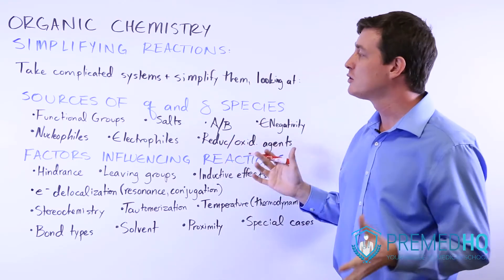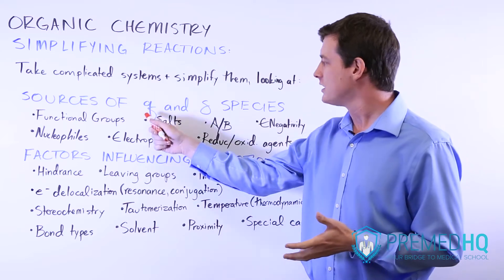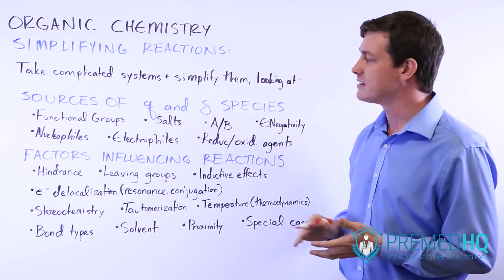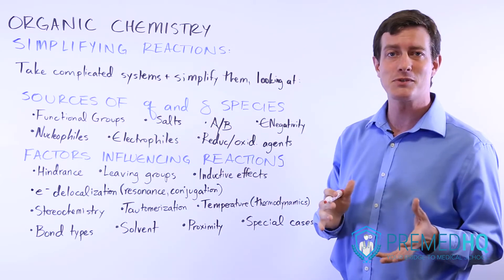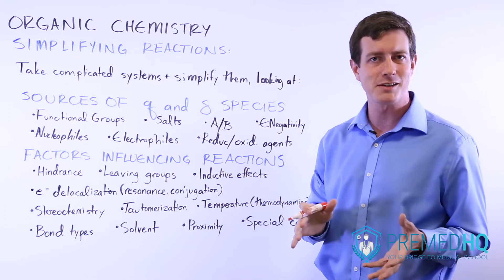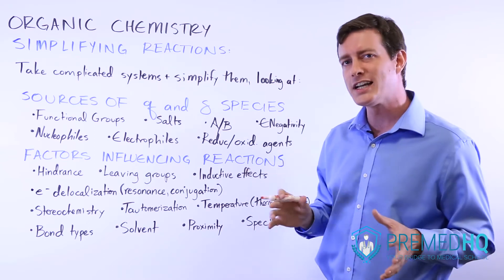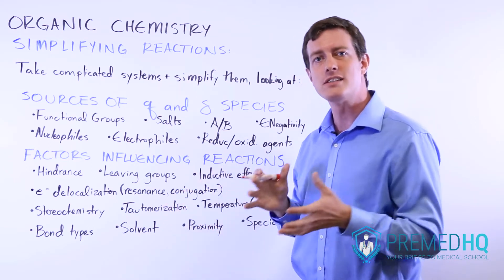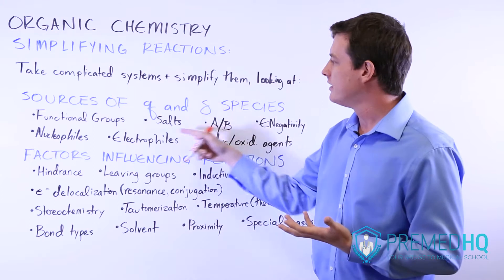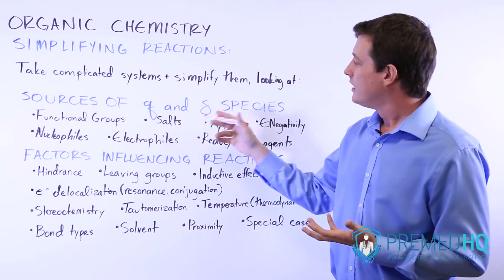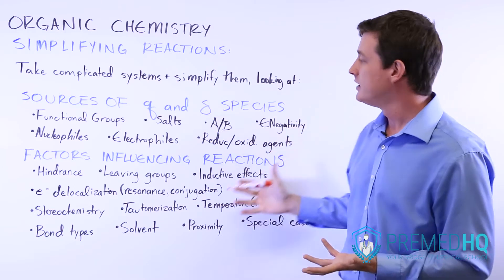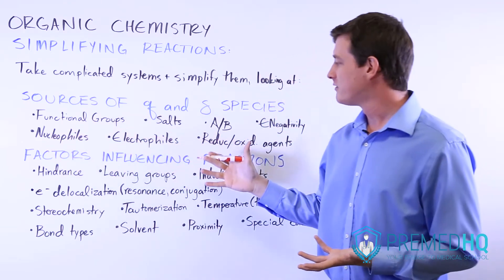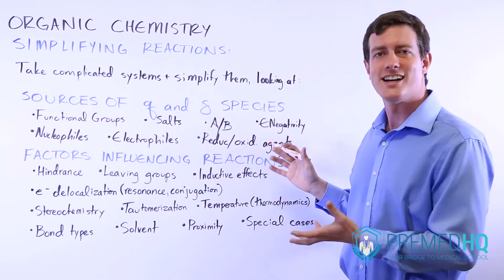And so we'll go through various sources that can yield these charged and partially charged species, and those include things like functional groups, salts. A lot of times where you see a sodium or potassium, for example, that's delivering a negatively charged species within the setting of a salt. We have acids and bases, electronegativity, nucleophiles and electrophiles, and reducing and oxidizing agents.